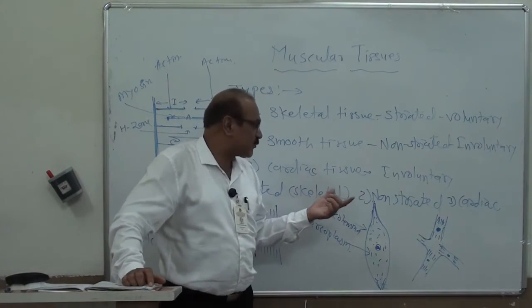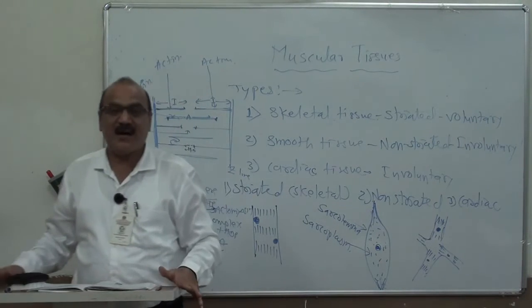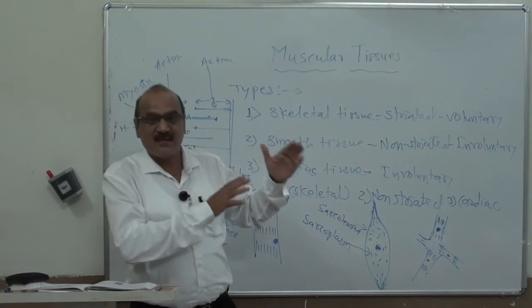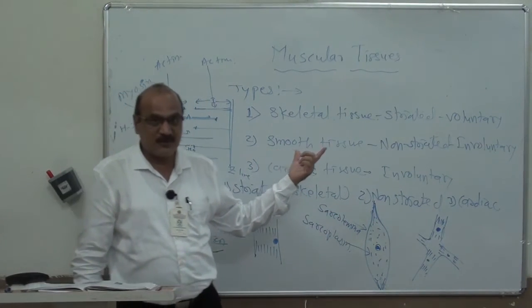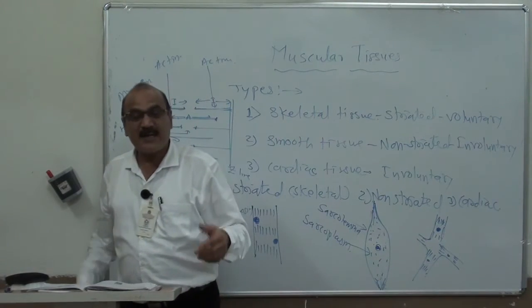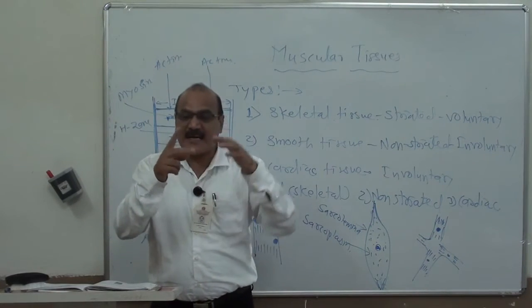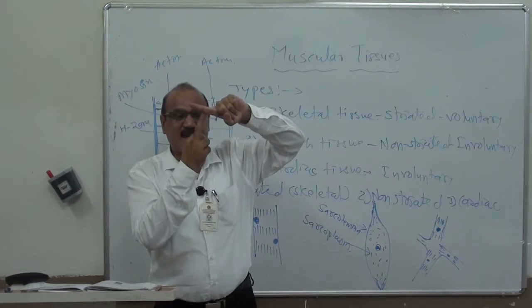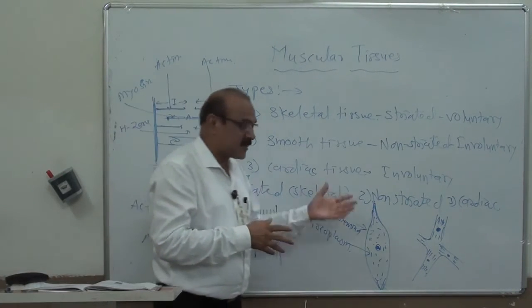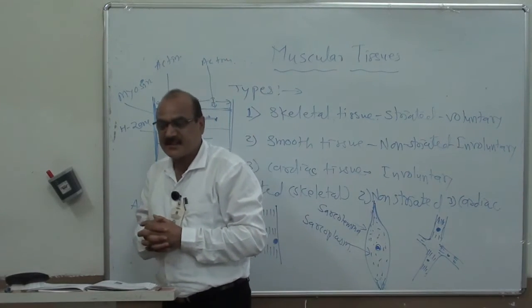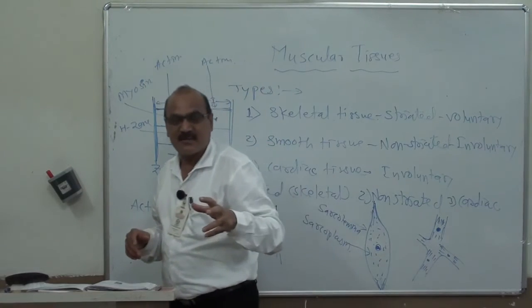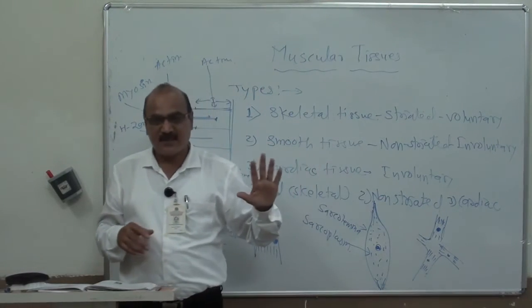The third type is cardiac muscle, found only in the heart. Cardiac muscles are also involuntary, with a mixing of both types: structure is similar to skeletal muscle, but function is similar to smooth muscle. The nucleus is present in the center, striations are present, and these muscles are interconnected. Cardiac muscles are not easily fatigued — if they fatigued completely, life would stop.